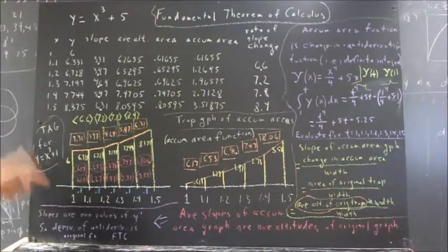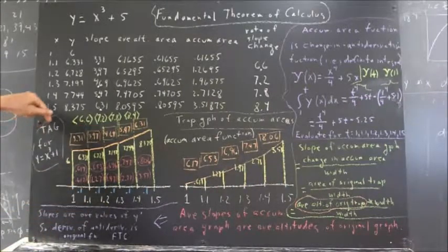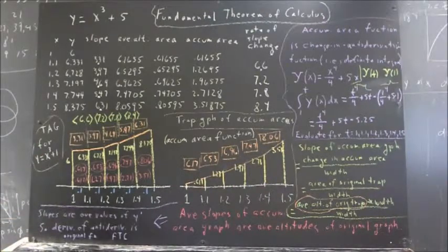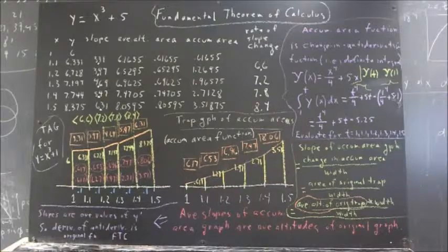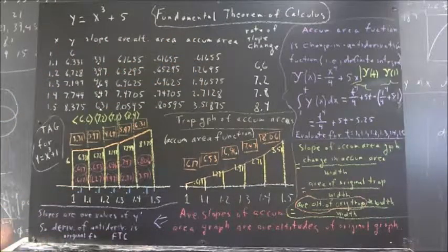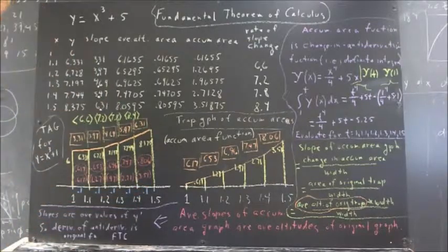So anyhow, here's the trapezoidal approximation graph, TAG trapezoidal approximation graph for y equals x cubed plus 1. I don't have to read it to you. You know how these numbers represent up here. If you don't you should look at the full video instead of the summary.